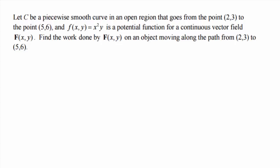So in this question, we're told that C is a piecewise smooth curve in an open region that goes from the point (2,3) to the point (5,6). And f(x,y) equals x squared times y is a potential function for a continuous vector field F(x,y). Find the work done by F(x,y) on an object moving along the path from (2,3) to (5,6).